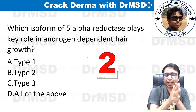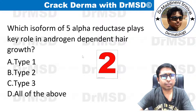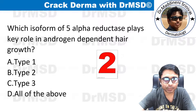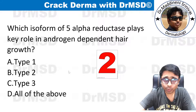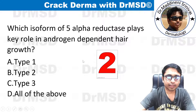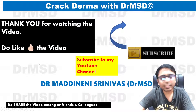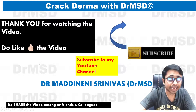That was today's MCQ. Tomorrow's MCQ is: which isoform of 5-alpha reductase plays a key role in androgen-dependent hair growth — type 1, type 2, type 3, or all of the above? Please answer in the comment section below. Thank you so much for watching. If you enjoyed this, please give it a like. Take care.